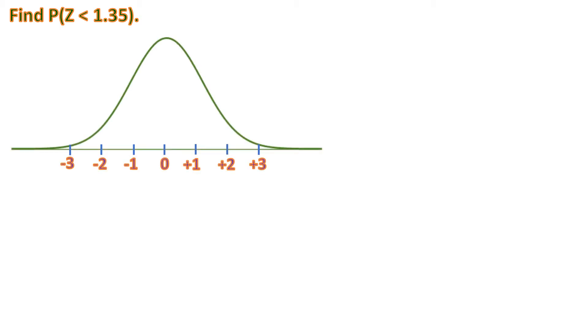For example, we have: find the probability of z less than 1.35. Probability is actually the area of the normal curve. Inside this normal curve is the area, and this area is what you call the probability — it is the percentage. The highest percentage is 100%, so the whole area of the normal curve is equivalent to 1, because 100% is 1 in decimal. If it's 0.8, then that means it's 80%, and so on. The total area is 1.